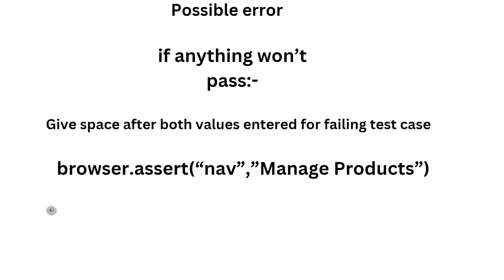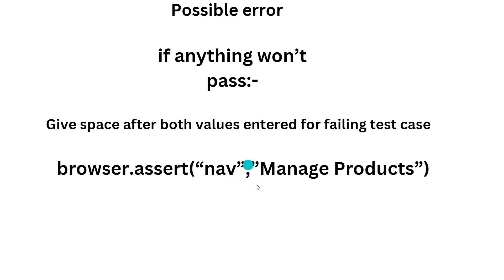If any test case fails, don't worry. For example, if 'title' is failing — in the code where you have 'nav, manage products', just add a space after the comma. Similarly, for dispatch, clicking, dispatch order, and other failing items, add a space between them — comma then space using the spacebar. Doing this should make all test cases pass.